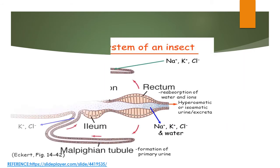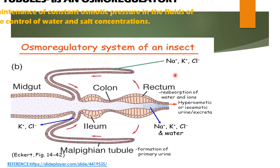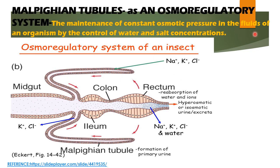This is the osmoregulatory system of an insect. Here we can see the Malpighian tubules, and the rectum performs reabsorption of water and ions — sodium, potassium — back into the body. Formation of primary urine occurs, and ultimately uric acid is excreted out. Osmoregulation also takes place here; reabsorption of water and ions in the rectum occurs due to living in dry conditions. The maintenance of constant osmotic pressure in the fluids of an organism is achieved by controlling water and salt concentration back into the hemolymph.